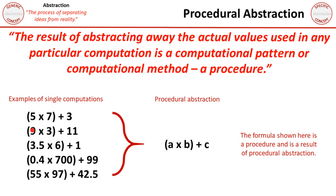So on the left here we have examples of single computations. Actual values have been placed in these three positions here, and there are obviously an infinite number of variations. However, if we replace the actual values with the placeholders A, B and C for example, then we replace the computations with a formula. And the formula shown here is a procedure, and is the result of procedural abstraction on these computations.